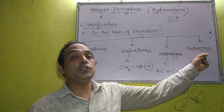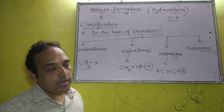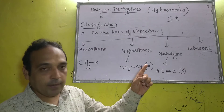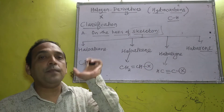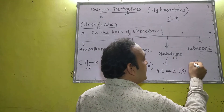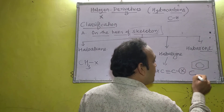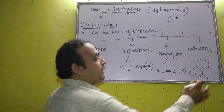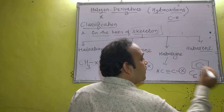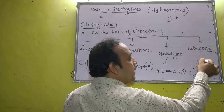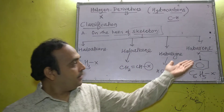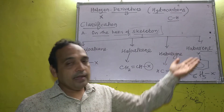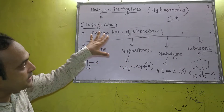The last type is haloarene. 'Arene' is used for aromatic compounds — compounds which have benzene-like structure and benzene-like properties. The molecular formula of benzene is C6H6. When one hydrogen atom is replaced from benzene, H6 converts to H5 — this is called haloarene. If replaced by Cl: chlorobenzene; by Br: bromobenzene; by I: iodobenzene.